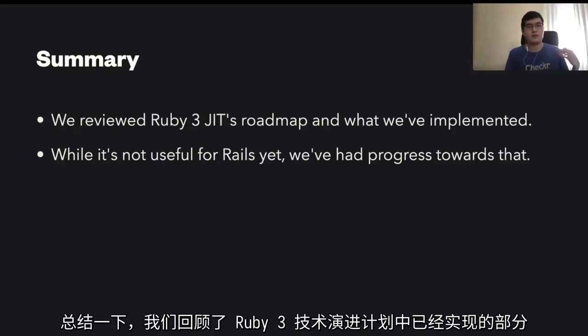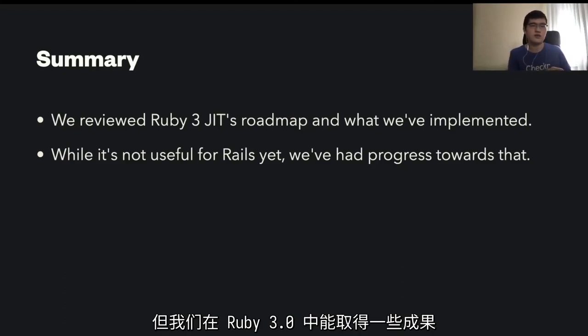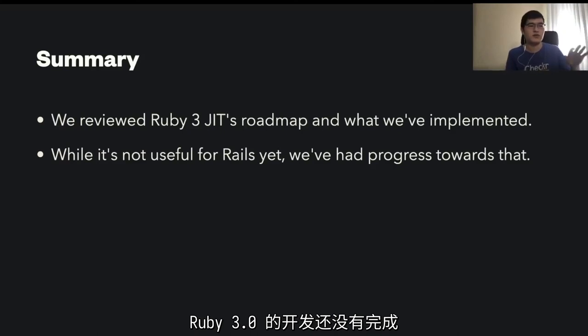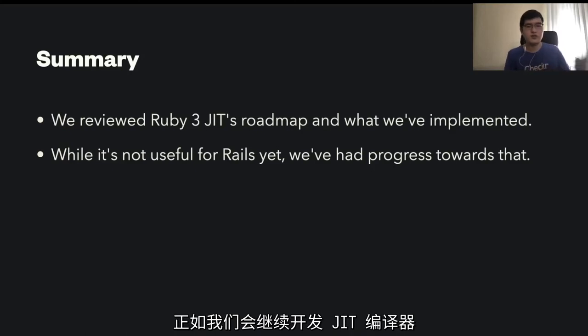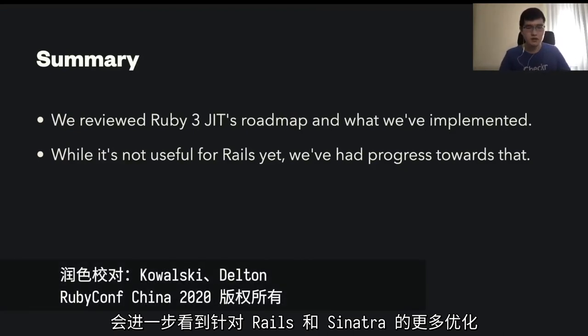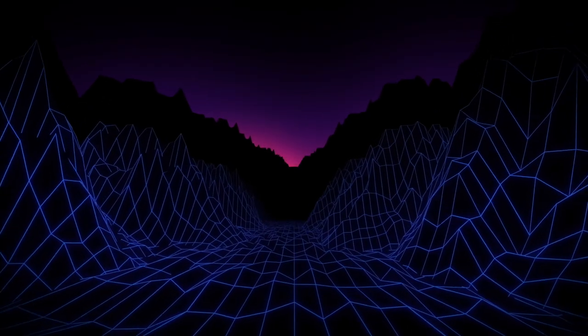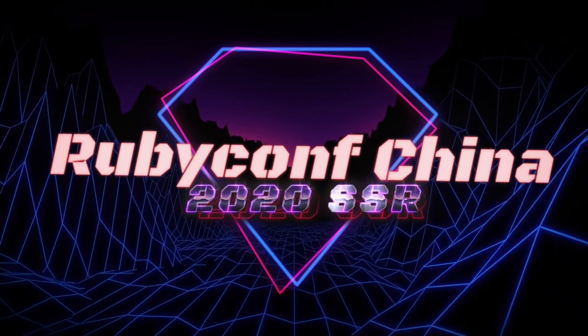In summary, we reviewed Ruby 3.0's roadmap and what we've already implemented. While it's not yet useful for web applications like Sinatra, we've had progress towards that in Ruby 3.0, and the Ruby 3.0 development is still not finished — we may see more progress in the Ruby 3.0 release. As we continue to develop the compiler, we'll see more optimizations for Rails, Sinatra, and real-world applications later. That's it, thank you for listening.